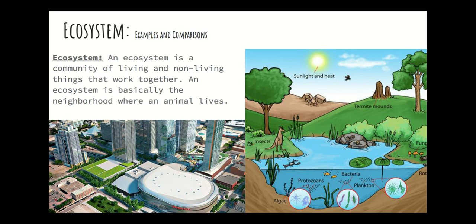Ecosystems — we've talked about these before, but it's important to always go back to information we've already learned. An ecosystem is a community where living (biotic) and non-living (abiotic) things work together. An ecosystem is basically the neighborhood where an animal lives. Just like you have a home with neighbors around you, an ecosystem is that whole community — schools, hospitals, grocery stores — all working together.